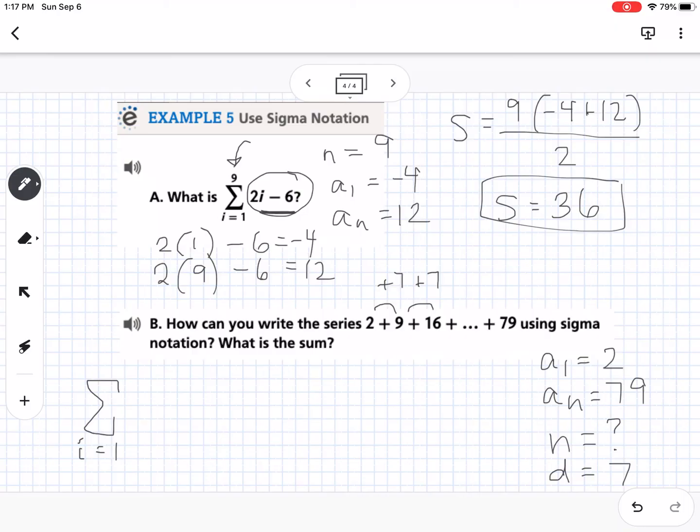We're going to use that to write our explicit formula. Our explicit formula is our first term, which is 2, plus d, which is 7, times (n minus 1). If we simplify that, we get 2 plus 7n minus 7. Then we're going to combine the 2 and the negative 7, so we get 7n minus 5. That right there is my explicit formula I'm going to write over here, but I'm going to use an i with it instead of n. So this is going to be 7i minus 5.